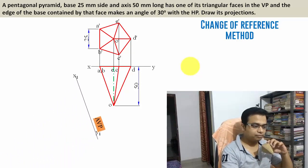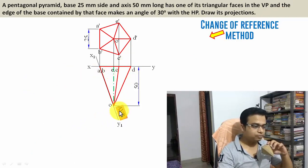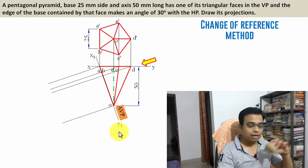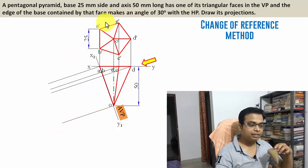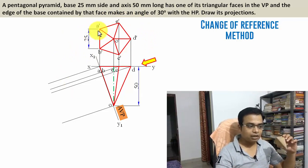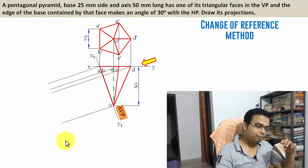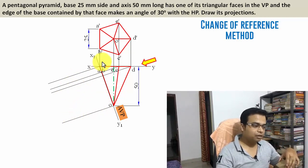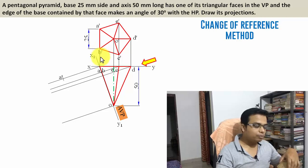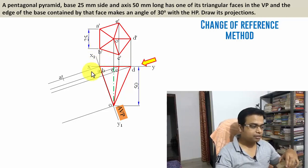Let me have all the lines produced from all six points perpendicular to the X1-Y1 line. We are creating the auxiliary front view, and for that the front view has to be taken as the reference. We need to take arcs of all these points with respect to XY and put them up with respect to X1-Y1. To locate point A-dash: keep one leg of your compass at A-dash, cut an arc with that as center — that's point A-dash. Similarly for B-dash: keep one leg at P-dash, cut an arc — that's point B-dash. For C-dash: take the radii of C-dash with respect to XY, keep one leg at C-dash, cut an arc — that's point C-dash.